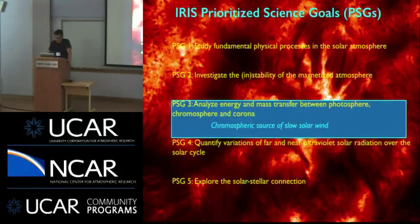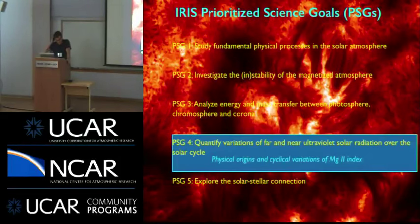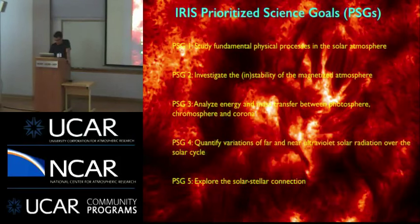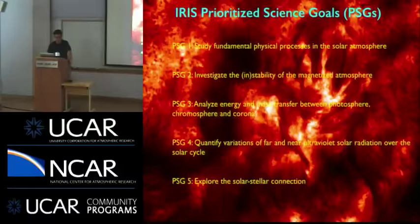IRIS was initially designed to analyze energy and mass transfer between the various layers in the atmosphere. In particular, we'll work with Hinode to better understand the chromospheric source of the solar wind. We're also measuring magnesium spectra and can now start a record over the whole solar cycle, looking at physical origins and cyclical variations of the magnesium 2 index. Finally, we'll explore the solar-stellar connection — oxygen abundance is an obvious one. With that, I think I can finish.